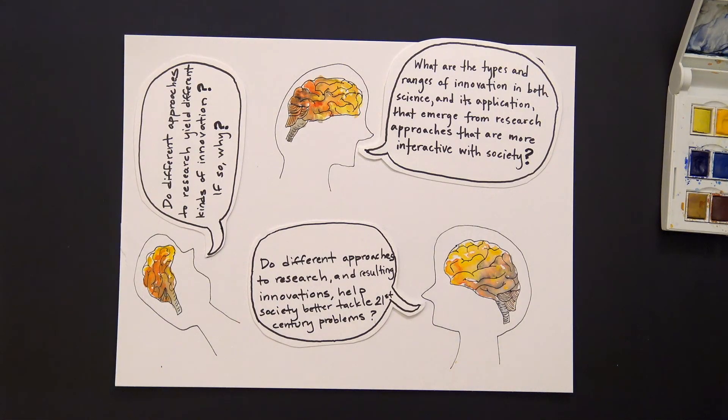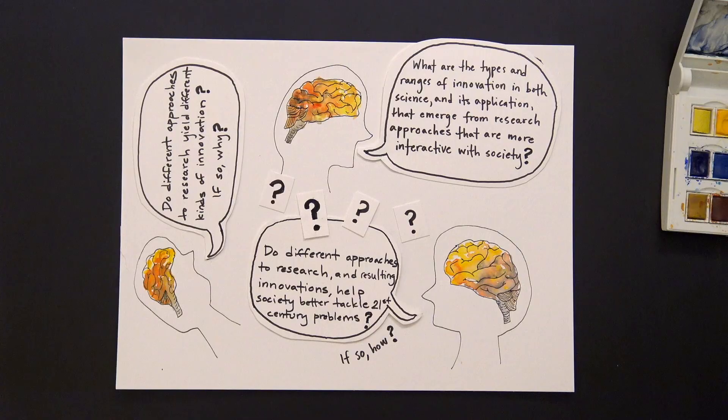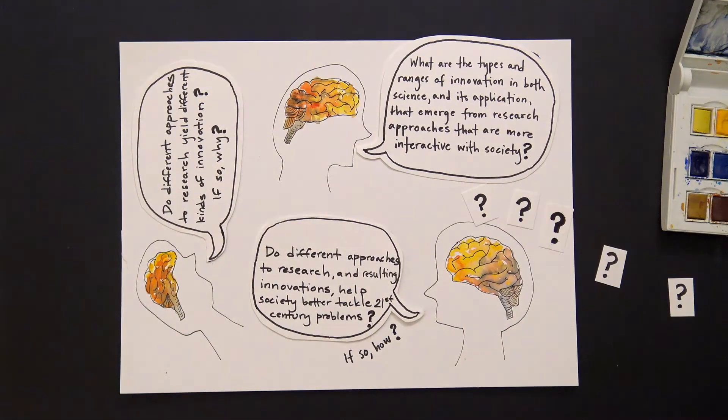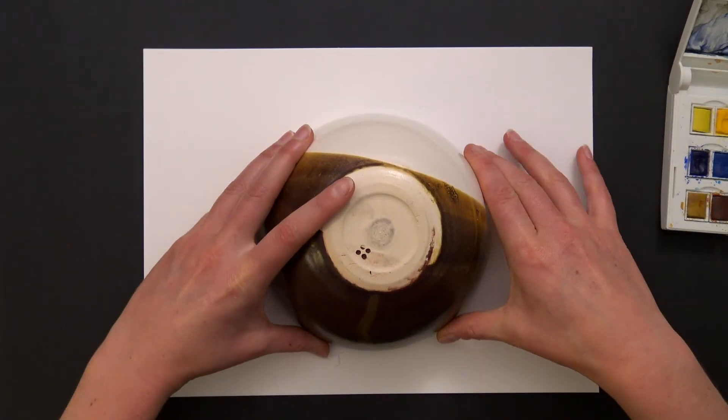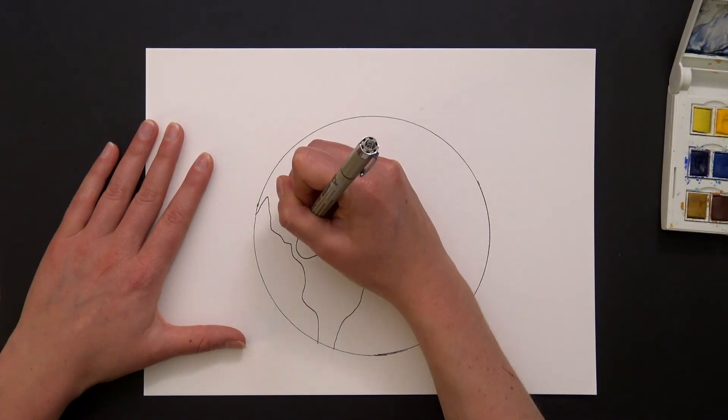Do different approaches to research and resulting innovations help society better tackle 21st century problems? If so, how? These are big questions. A lot can be learned about changes in how we do science and what spurs innovation by looking at the Earth sciences.